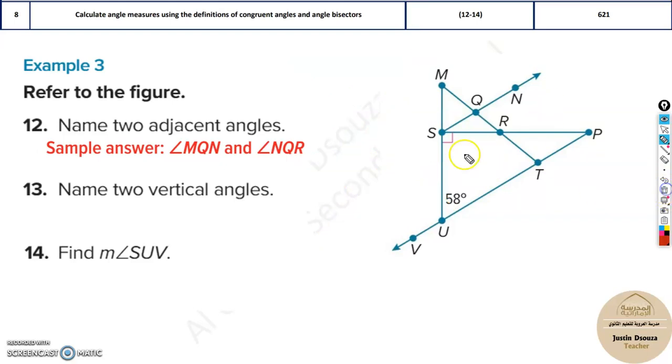Now here we can see plenty of vertical angles. Either this or this, this or this, anything. One of the sample answers is SRQ and TRP. So SRQ this, that would mean the other angle would be this, that is TRP.